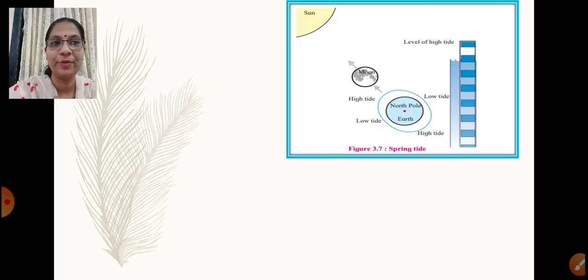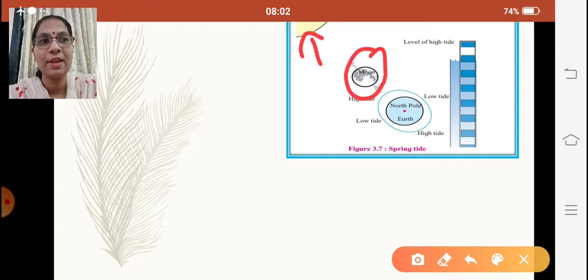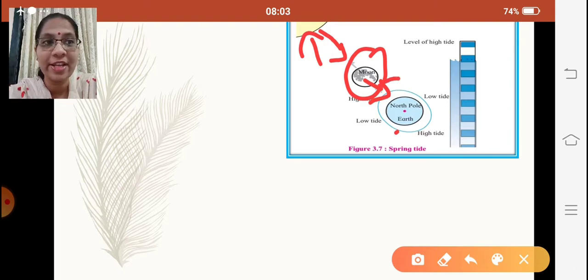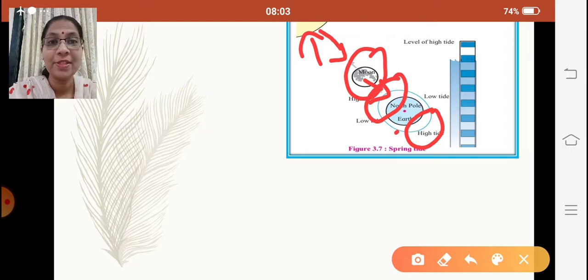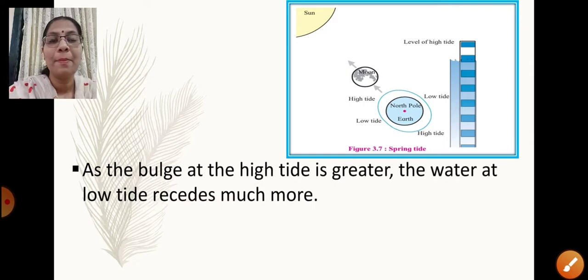Looking at the diagram, we can see the sun, the moon, and the earth are in a straight line. The gravitational pull of the sun and the gravitational pull of the moon act in the same direction. Since they are acting in the same direction, the water level rises — we have high tide on both sides. This is the situation on the new moon day and the full moon day. As the bulge at high tide is greater, the water at low tide recedes much more.